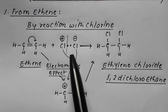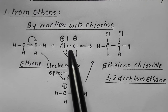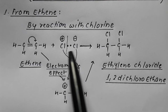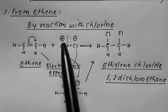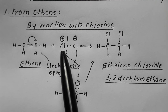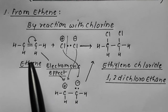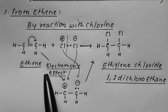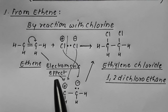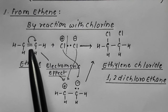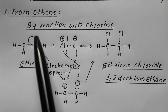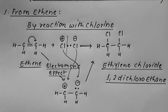Discussing the mechanism: this molecule of chlorine undergoes heterolytic cleavage. The shared pair is taken by one chlorine, making it negatively charged; the other chlorine becomes positively charged and is electron deficient. Meanwhile, the molecule of ethene undergoes the electromeric effect — the shift of the pi electron pair onto one of the two atoms.